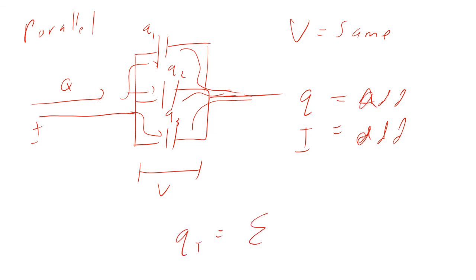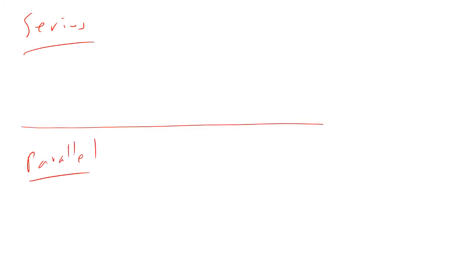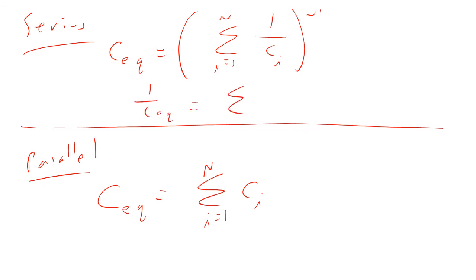That's the difference between series and parallel for capacitors. For parallel, the equivalent capacitance is the sum of the individual C's. For series, the equivalent capacitance is the sum of the individual 1 over C's, all raised to the minus one — or equivalently, 1 over C_eq equals the sum of the 1 over C_i's. That's how it's written in the book.